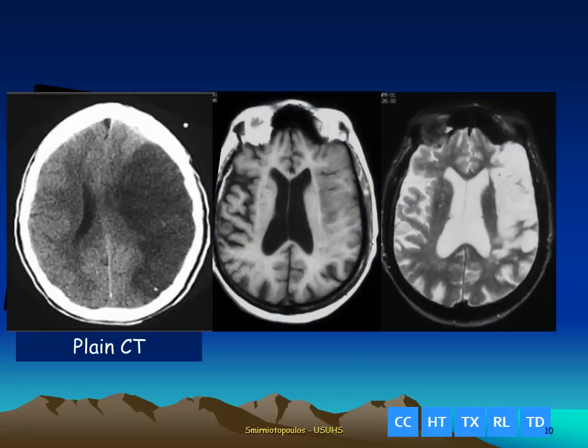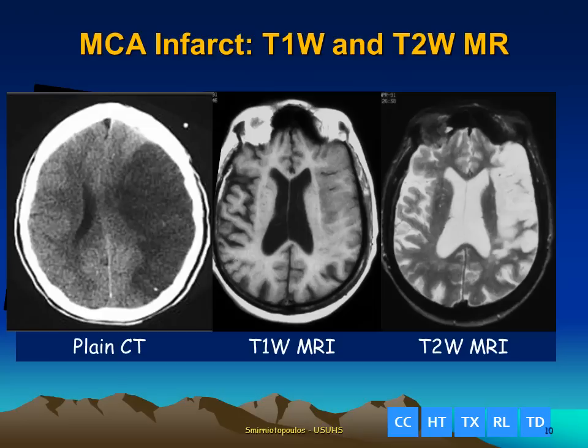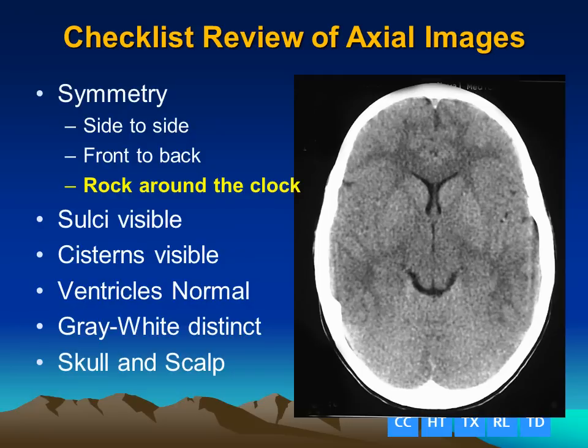For our last case, we have a patient who has abnormal attenuation and abnormal signal intensity of the cerebral cortex — abnormally low signal on the T1-weighted image, and abnormally high signal gray matter on the T2-weighted image. This is consistent with a large middle cerebral artery cerebral infarction.